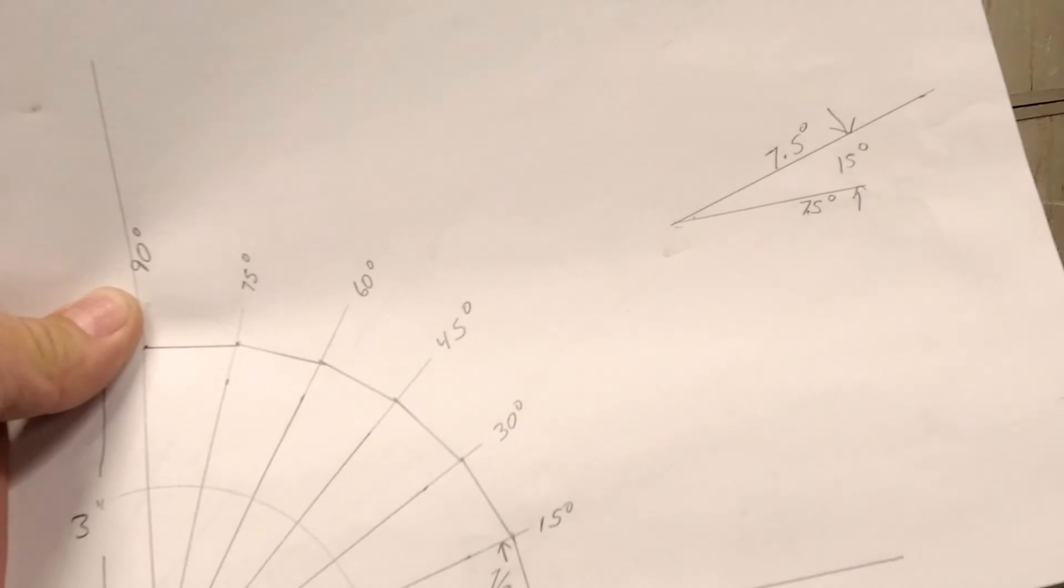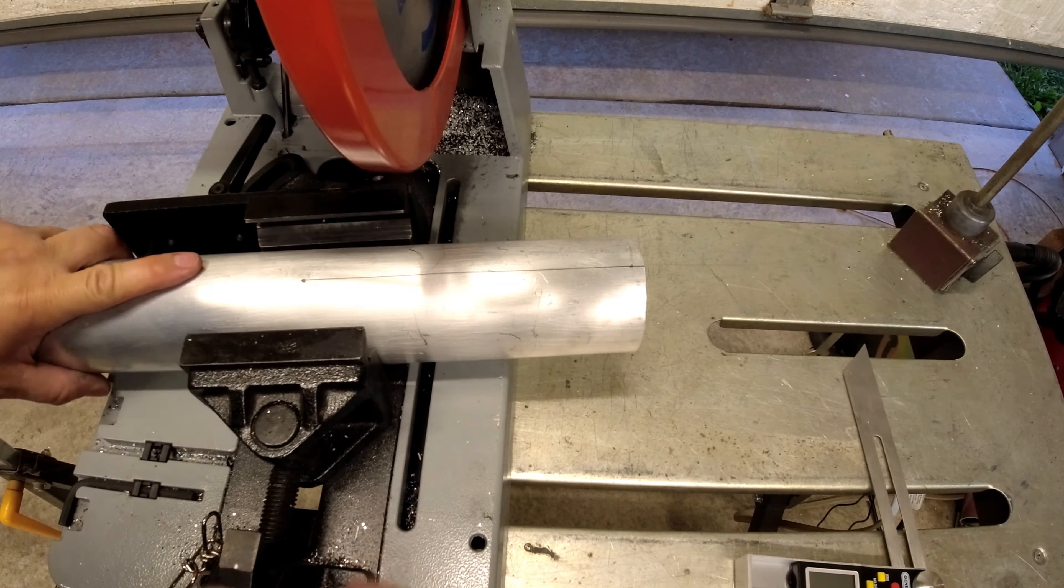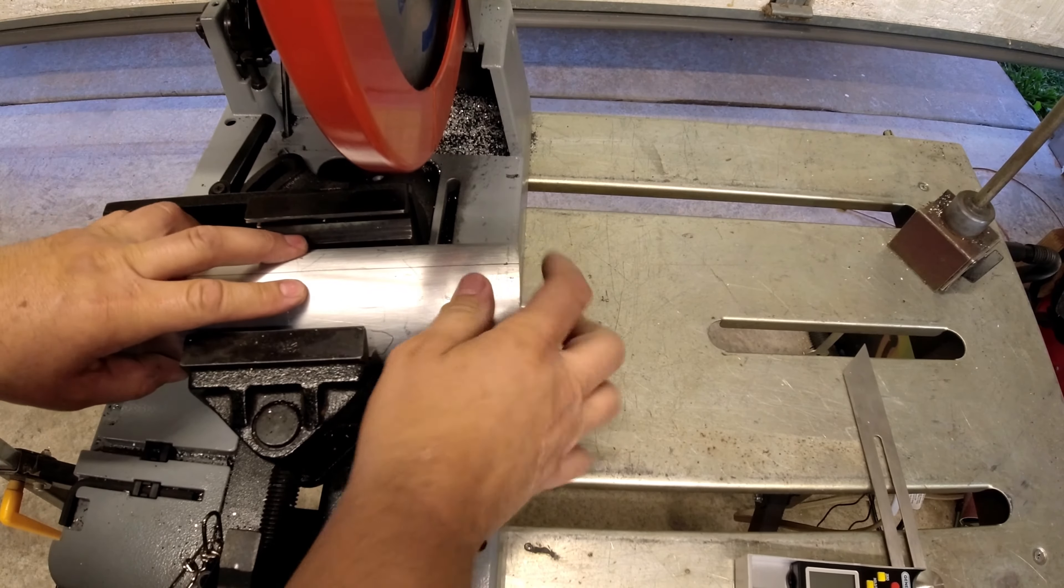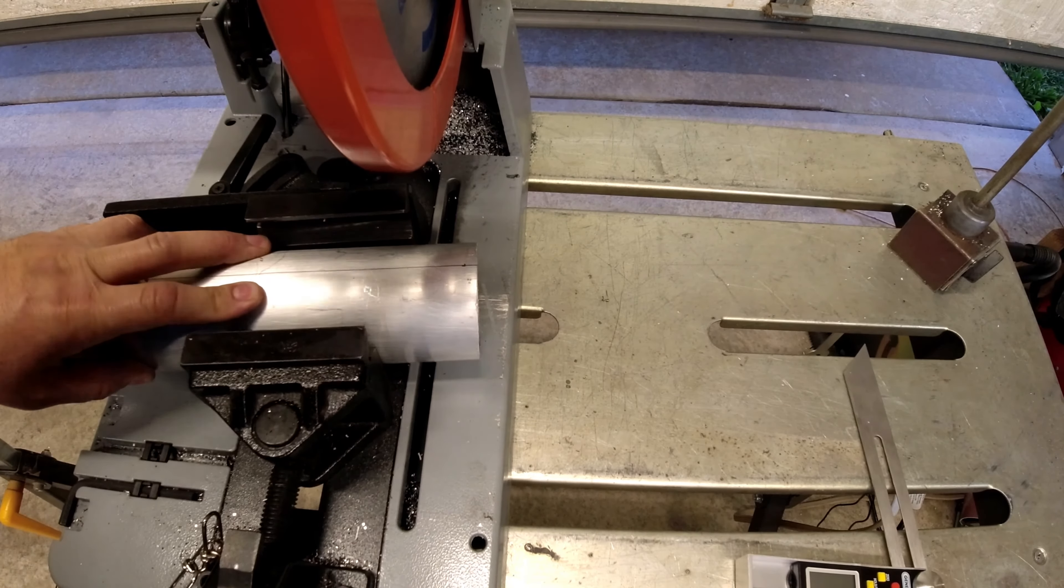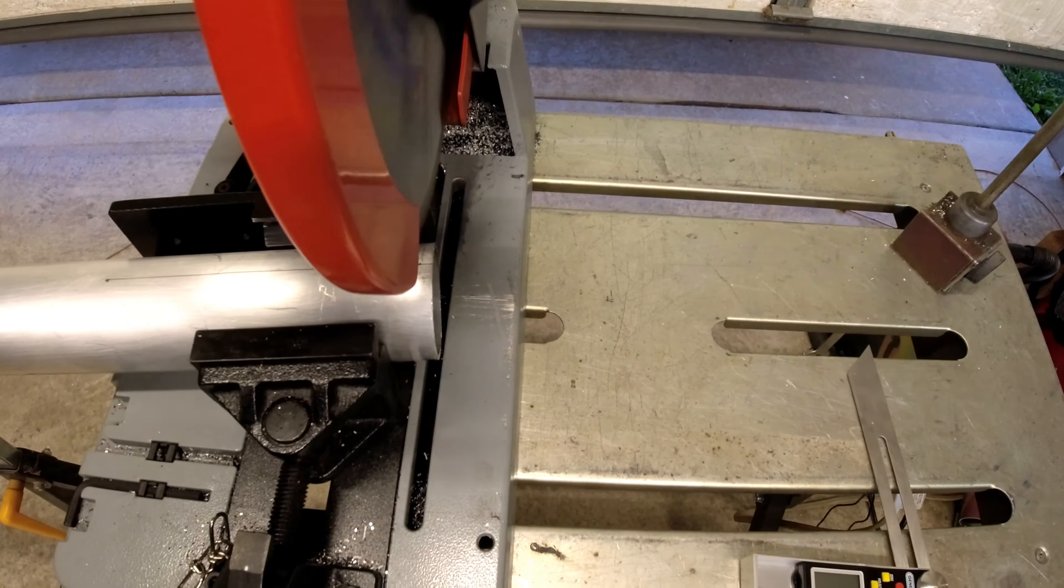So in our last videos we laid out, we want 15 degrees - we'll make two seven-and-a-half-degree cuts. All right, so we're going to get our line so it looks like it's straight up, and we're going to take our first cut.